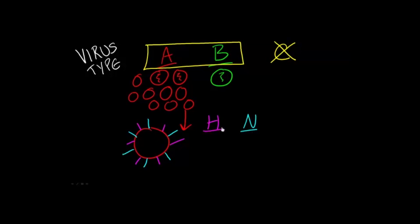Now these surface proteins come in many different flavors. There are actually 17 different kinds of hemagglutinin proteins and 10 different kinds of neuraminidase proteins.